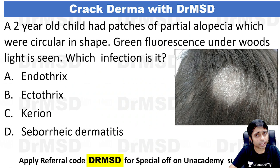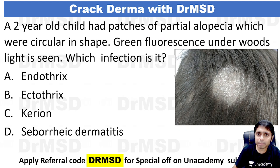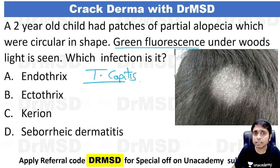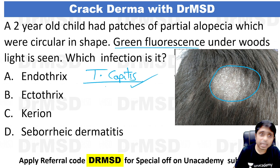So this is today's question — just pause and try to answer. A two-year-old child has patches of partial alopecia which are circular in shape, and there is a green fluorescence under Wood's lamp examination. Which infection is this? If you thought this is Tinea capitis — looking at the loss of hair on the scalp associated with some scaling — that answer, Tinea capitis, is right.